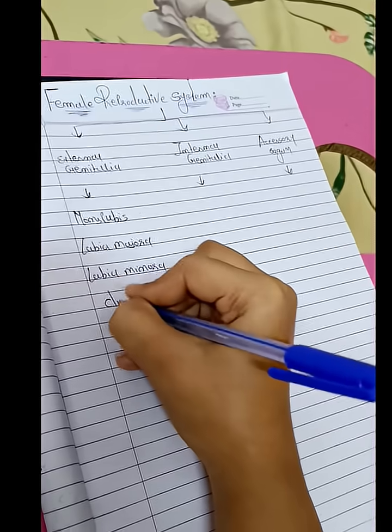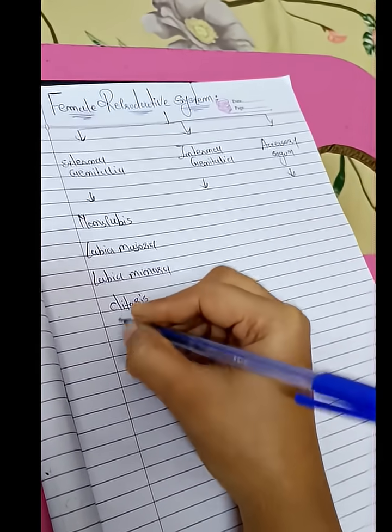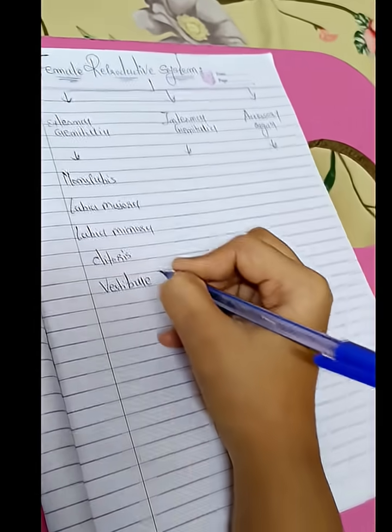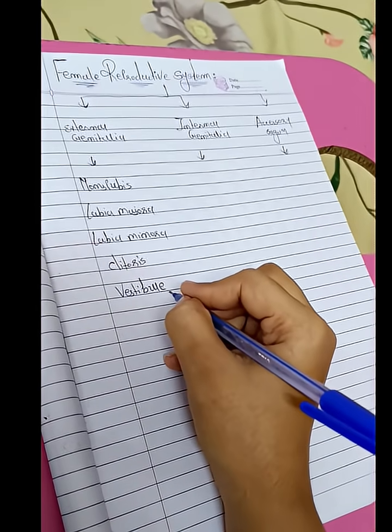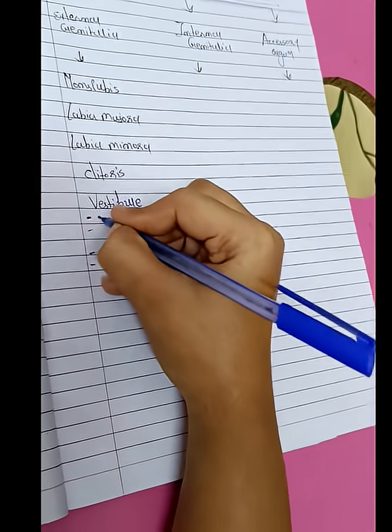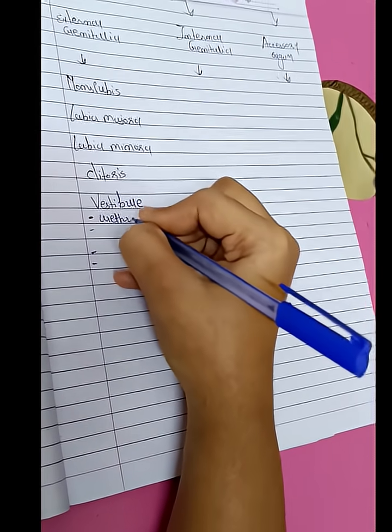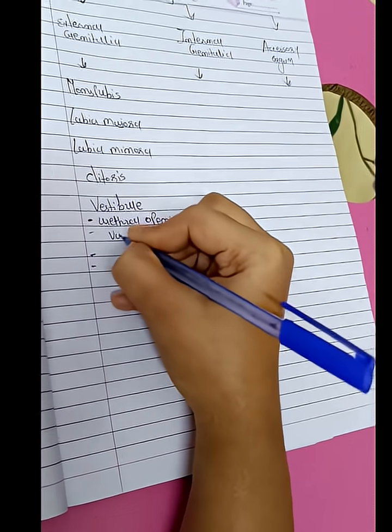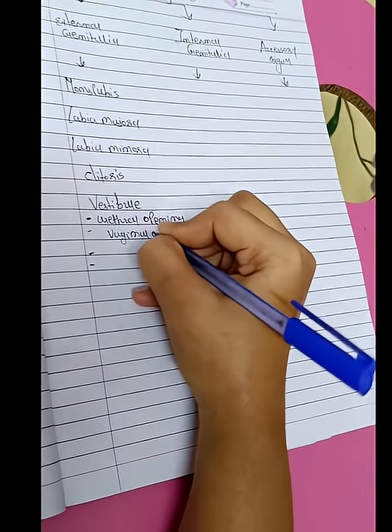Fourth is clitoris. Fifth is vestibule. Into the vestibule there are three boundaries and four openings. Those four openings are: urethral opening, vaginal orifice and hymen.